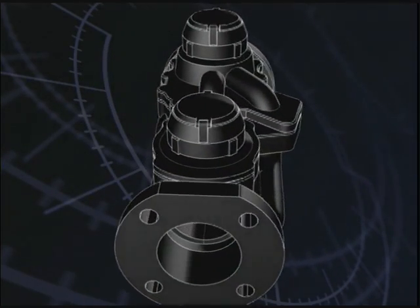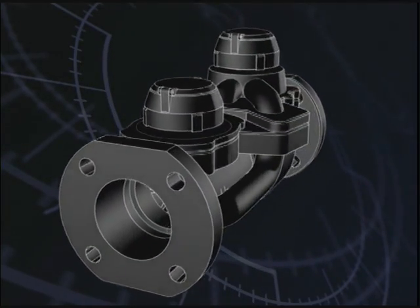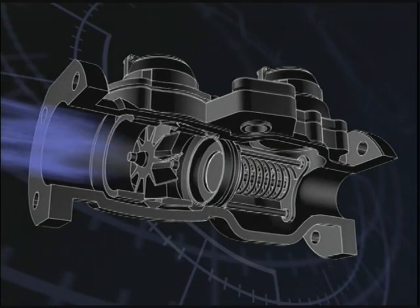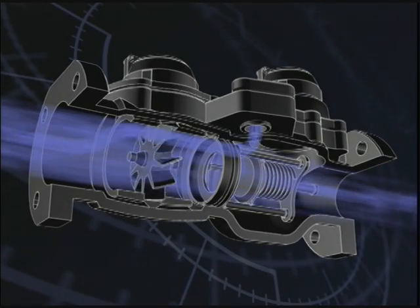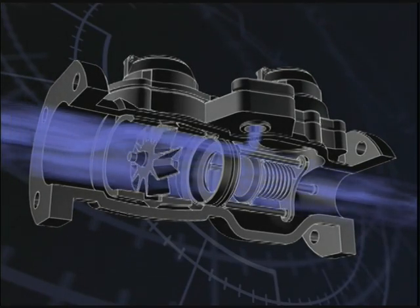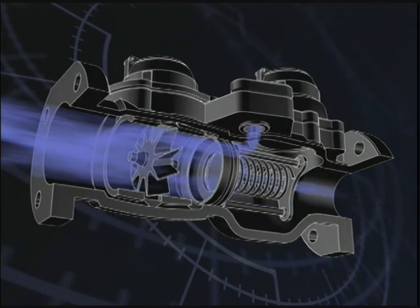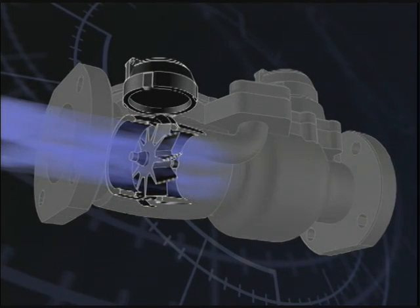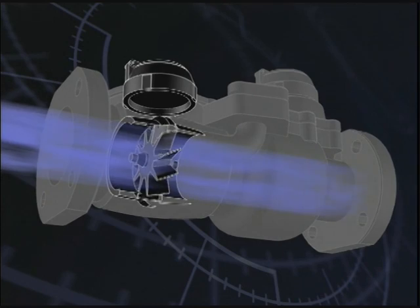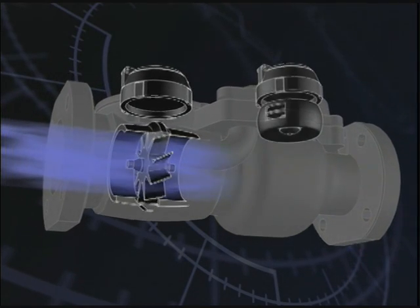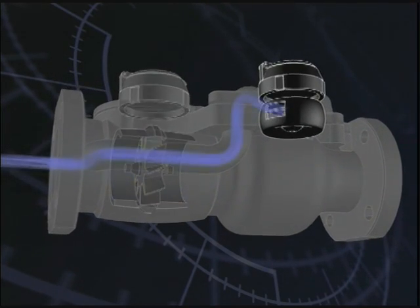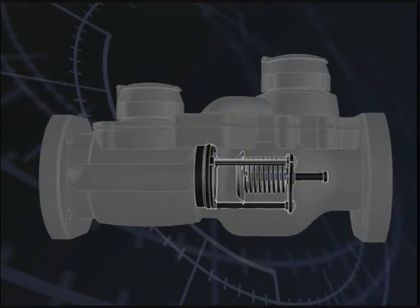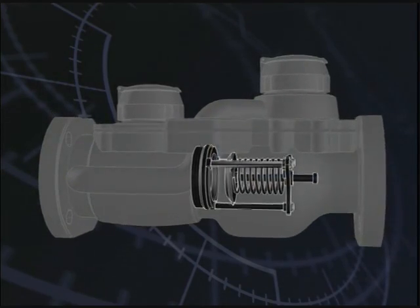Compound meters are often used for customers that have wide variations in flow rates and large quantities of water use. There may be times of the day when the water demand is very high, and other times when there is little or no use. A standard compound meter consists of three parts: a turbine meter, a residential type meter, and an automatic valve arrangement, all incorporated into one body.